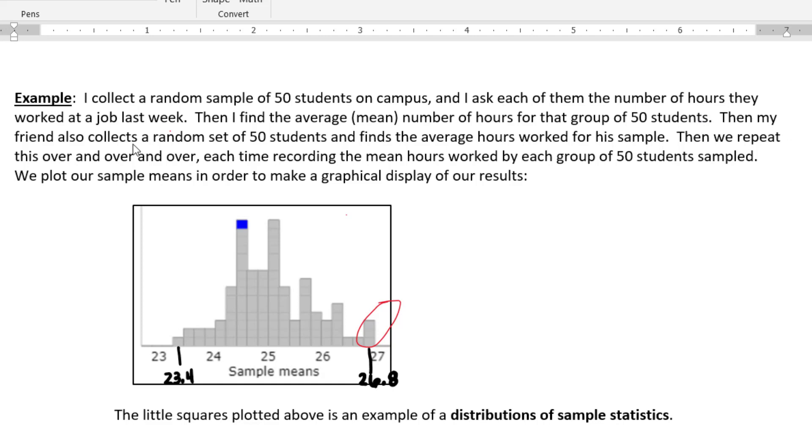Then my friend also goes out and collects a random sample of 50 students on campus and my friend finds the average hours worked for his group of 50 students. Then we repeat this over and over, lots of times, going out collecting a group of 50 and measuring their average work time. So we take those average times for each of our groups of 50 students and we plot them in a dot plot below.